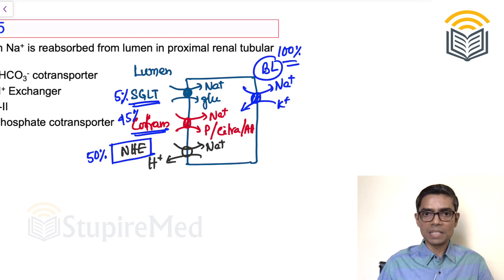If the question is not specifying anything, again your answer will be sodium potassium ATPase pump because all of these transporters are secondary active transporters. They are linked to sodium potassium ATPase pump.